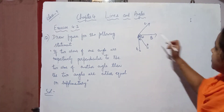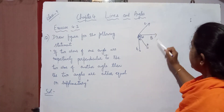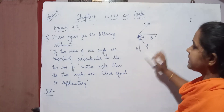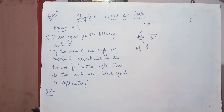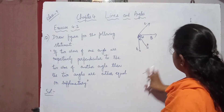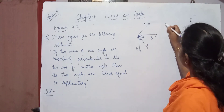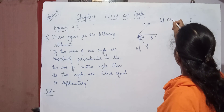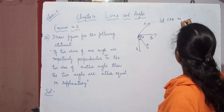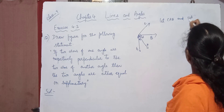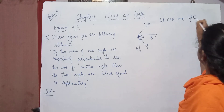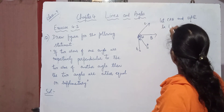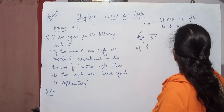Then we have to show that angle CAB and angle DAE are both either equal or they are supplementary, that is they sum to 180 degrees. So if you draw this figure, let CAB and DAE be the two angles.